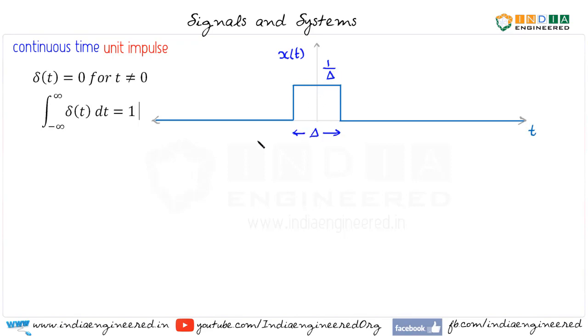Now the area under this curve using the integral minus infinity to infinity x(t) dt. In this case, we can calculate it really easily. That is the area under this curve. So it has a width Δ and a height 1/Δ. So the area is Δ into 1/Δ, which is equal to 1. So one property of unit impulse is satisfied by this signal: unit area. The area under the curve is 1.